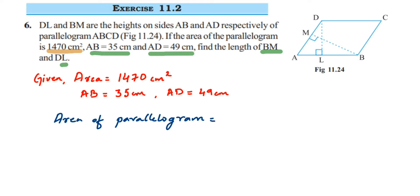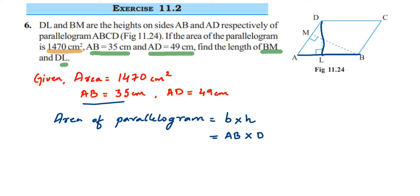The formula is: area of parallelogram = base × height. In the first case, I'm going to take AB as the base. When AB is the base, the corresponding height is DL. So I'll find the value of DL first.